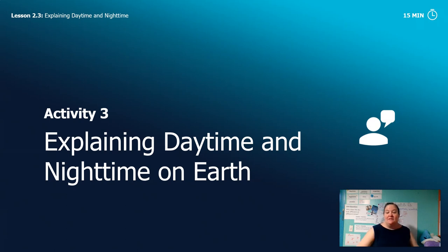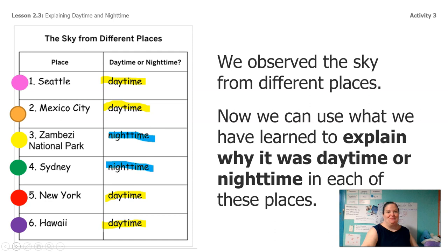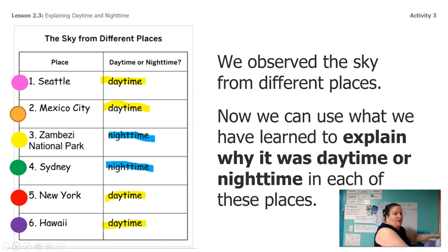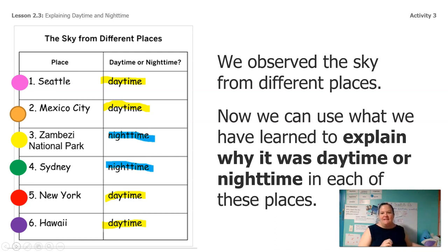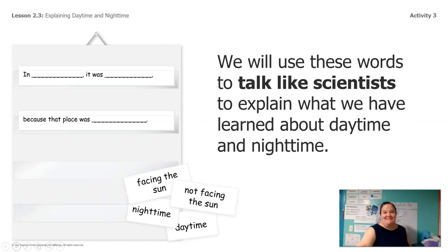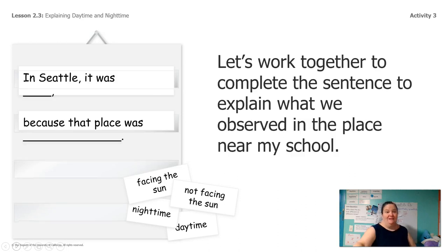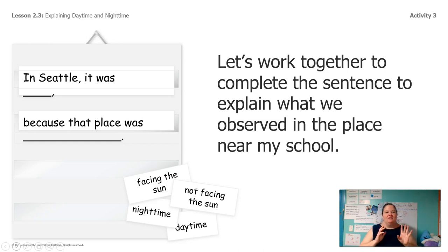Let's explain some of the things that we've just learned about daytime and nighttime on Earth. We've been doing so many different ways of recording our data. We had our chart where we observed different places and put stickers on our globe for those different places and said which ones were daytime and nighttime. Now we're going to use this same data table to make some sentences, using these words to help us talk like scientists so we can explain to other people what we found out today. Let's start with Seattle, because that's where I'm from.